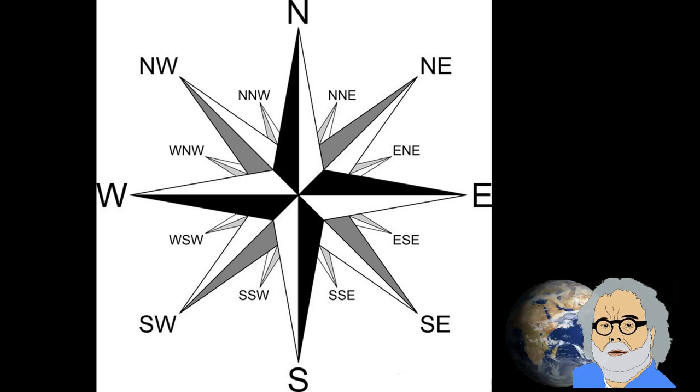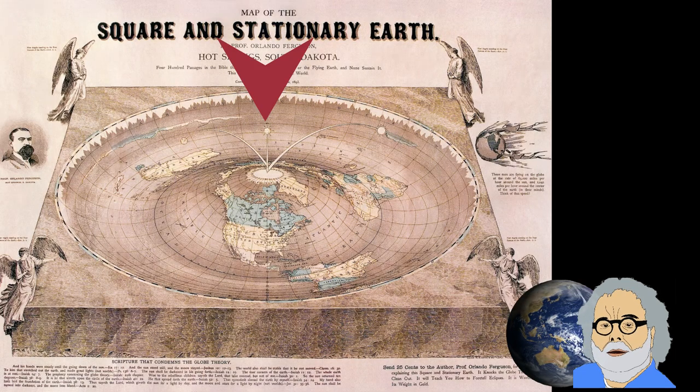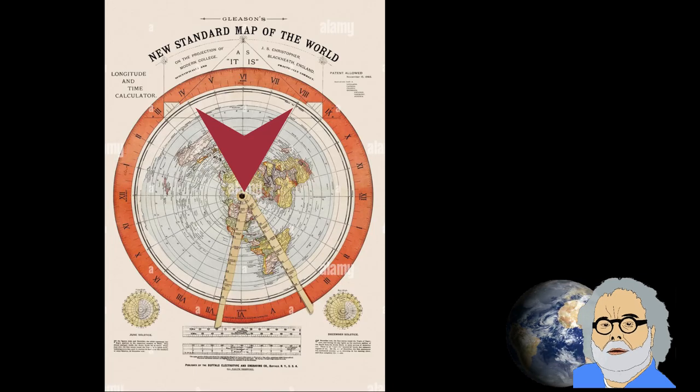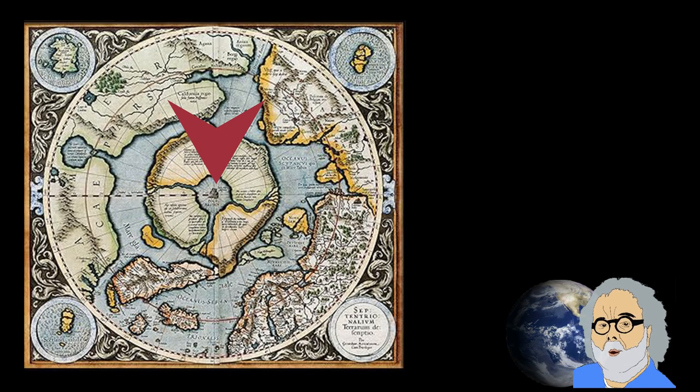Both globe earthers and flat earthers agree on the observation that there is a point called north above which there is one star, Polaris, around which all the other stars appear to rotate. Other directions I will call away from north and perpendicular to away from north.